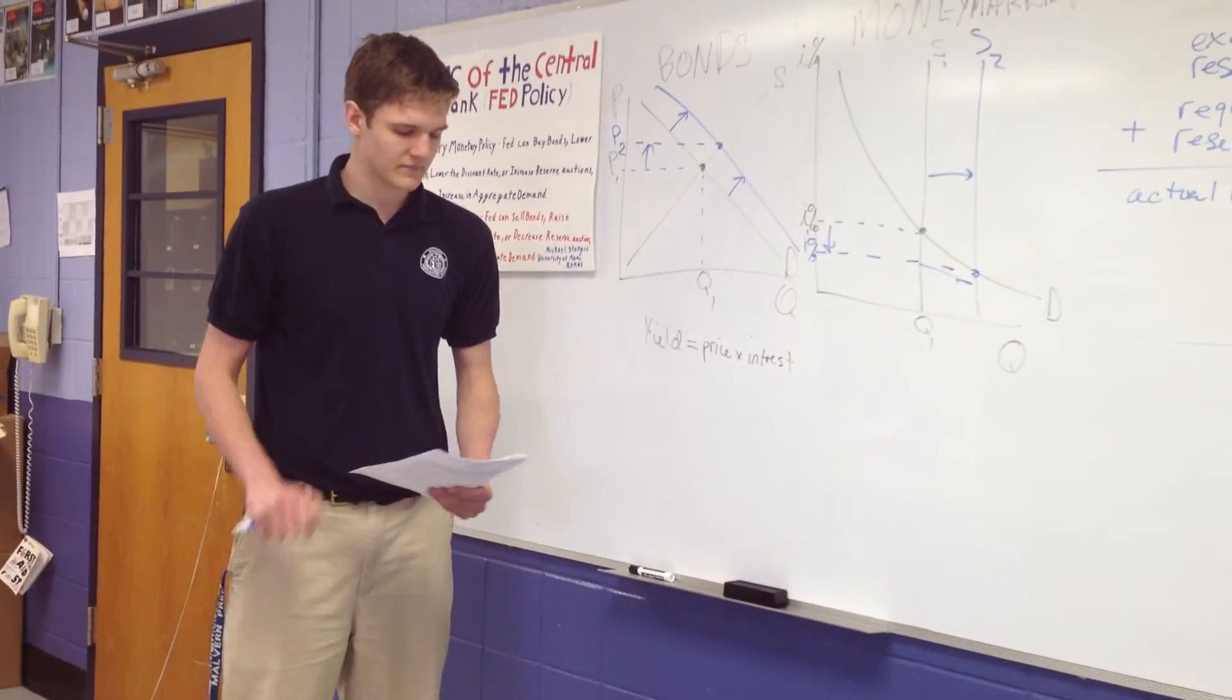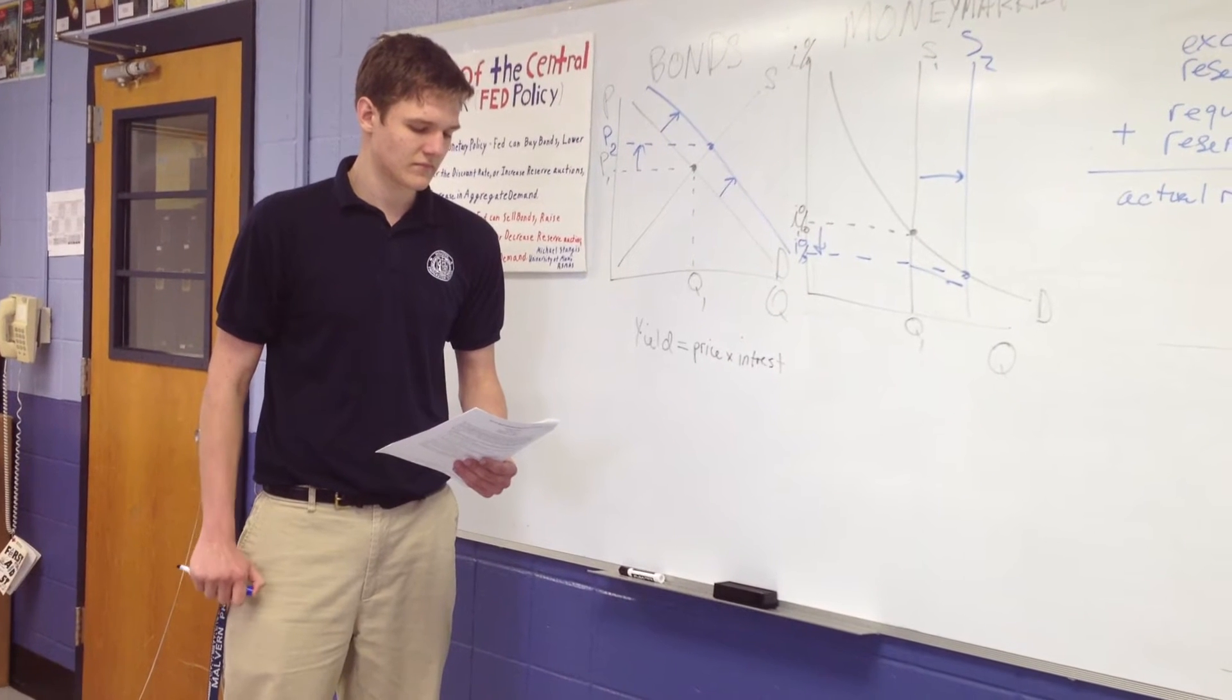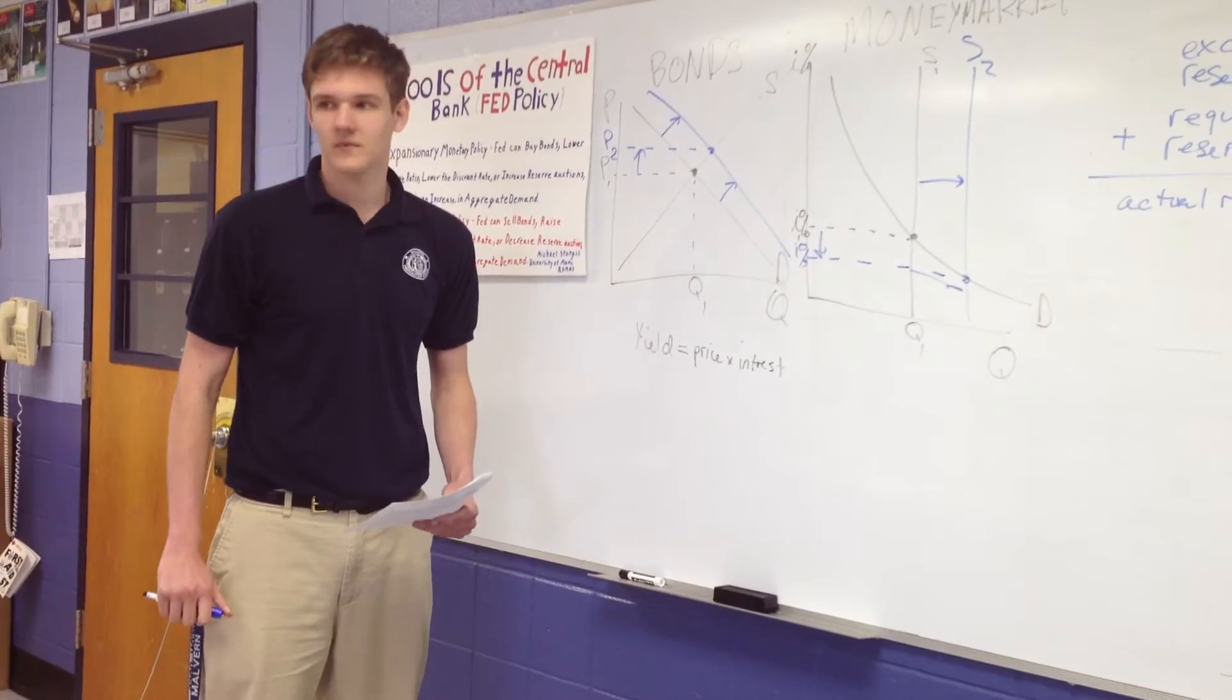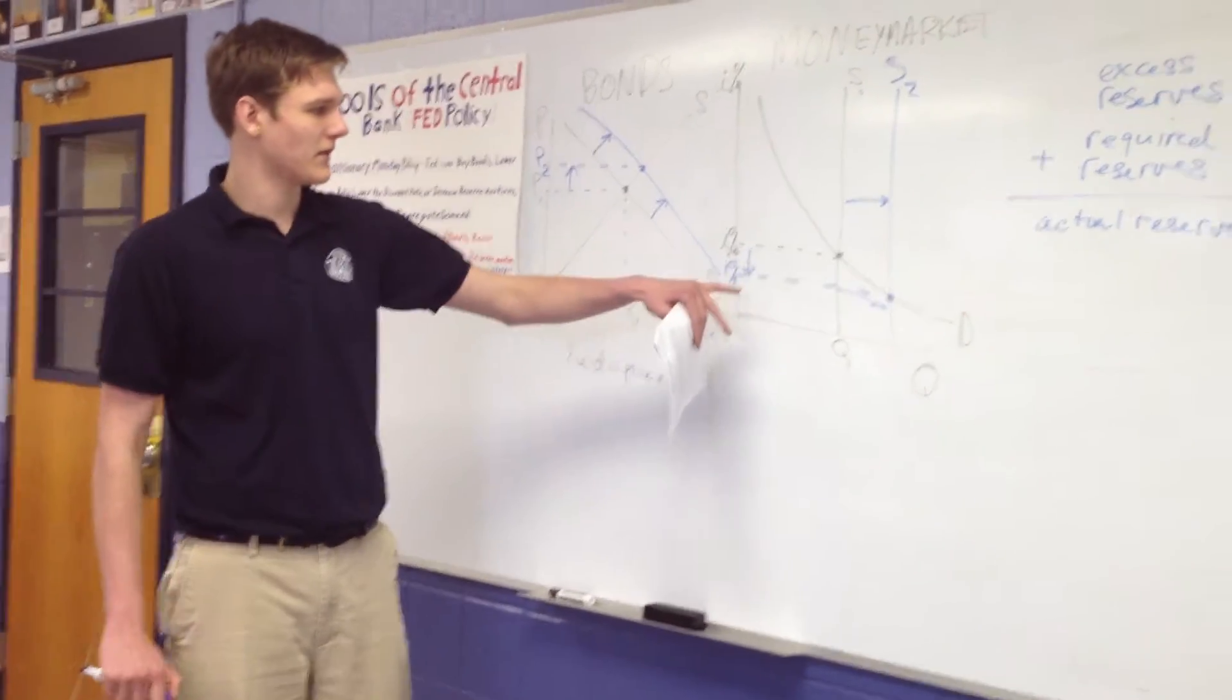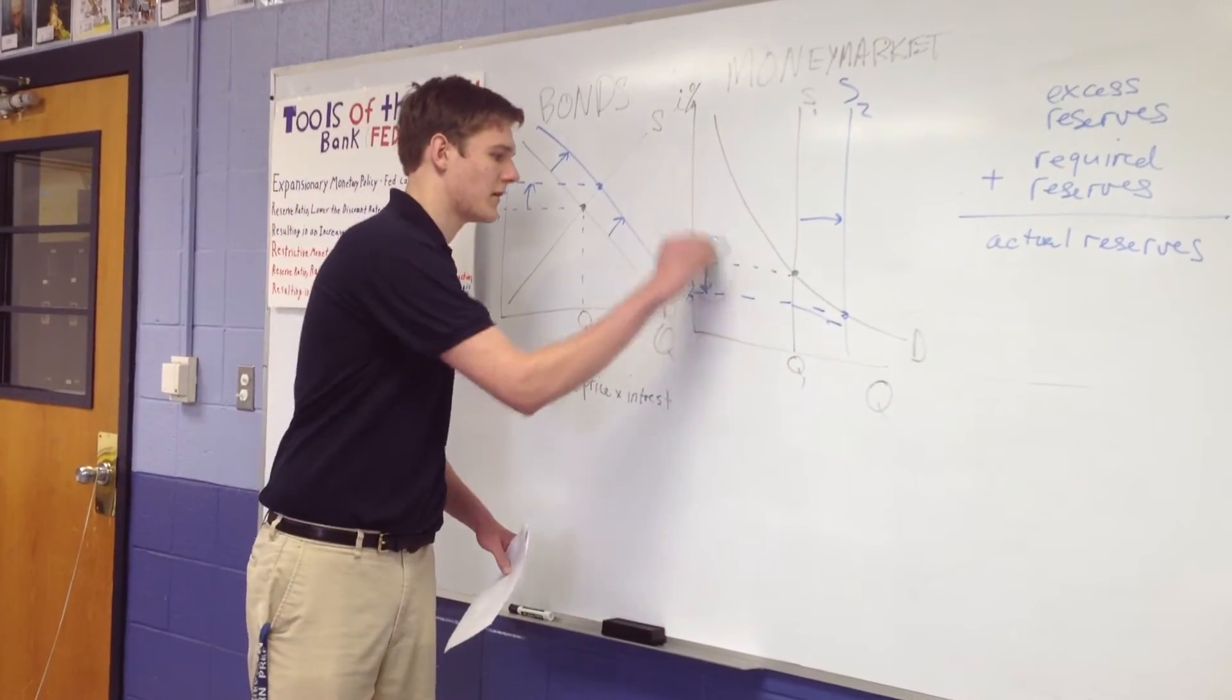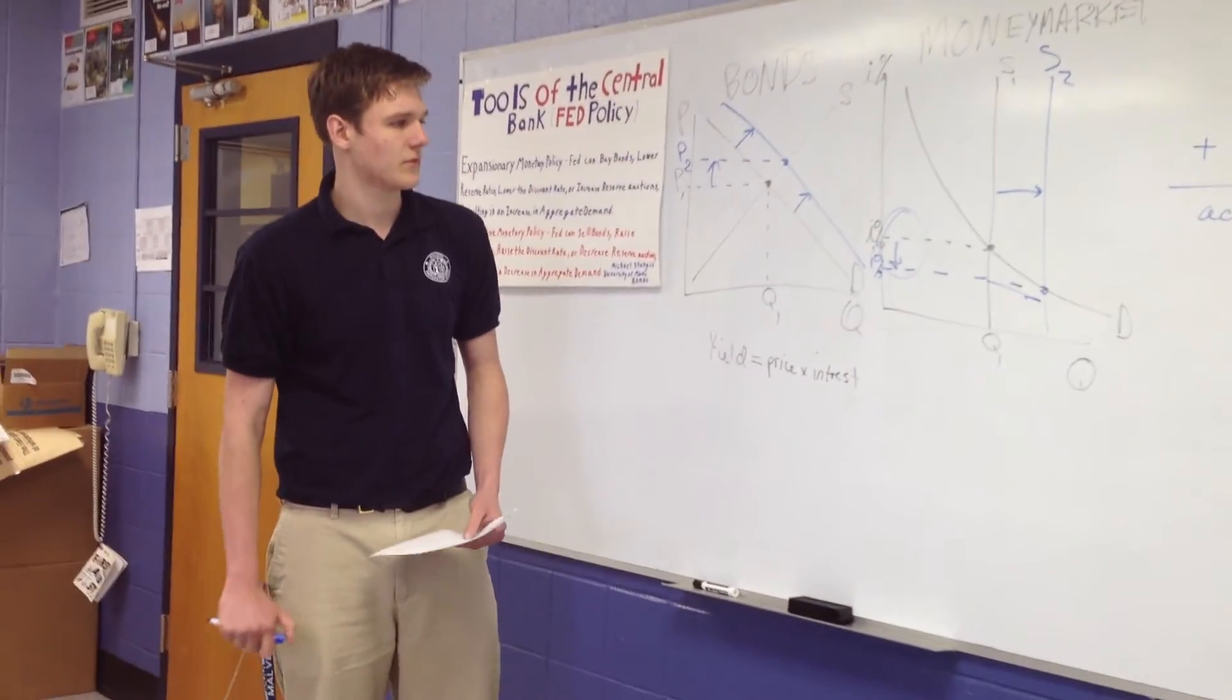All right, letter B. Using a correctly labeled graph of the money market, show the effect of the open market operation from Part A-1 on the nominal interest rate. Okay, so I kind of did that in Part A. You can see they increased the supply, and so the interest rate decreased, which is what they wanted.